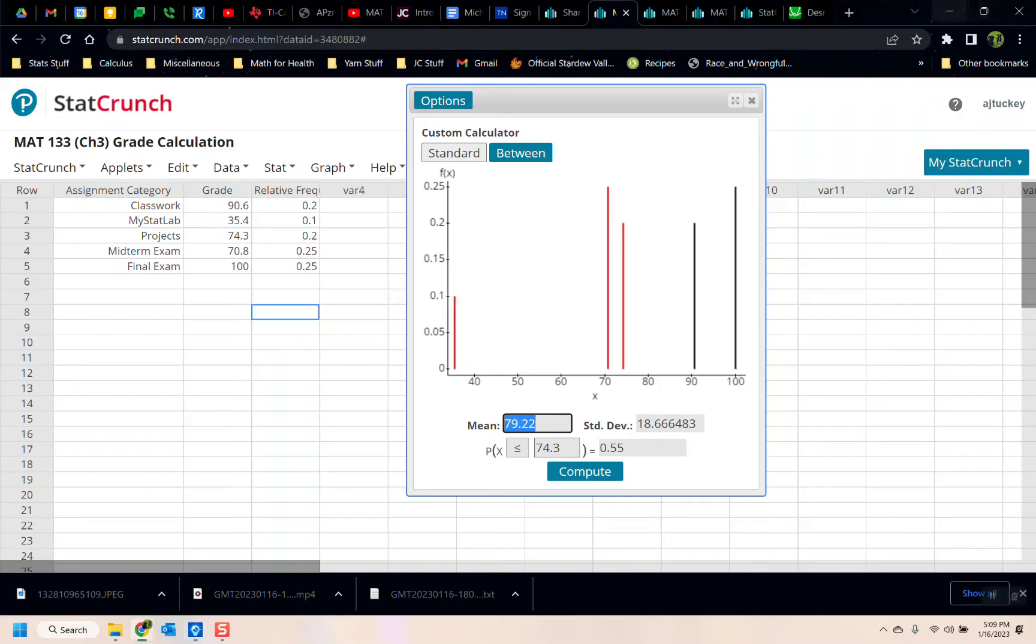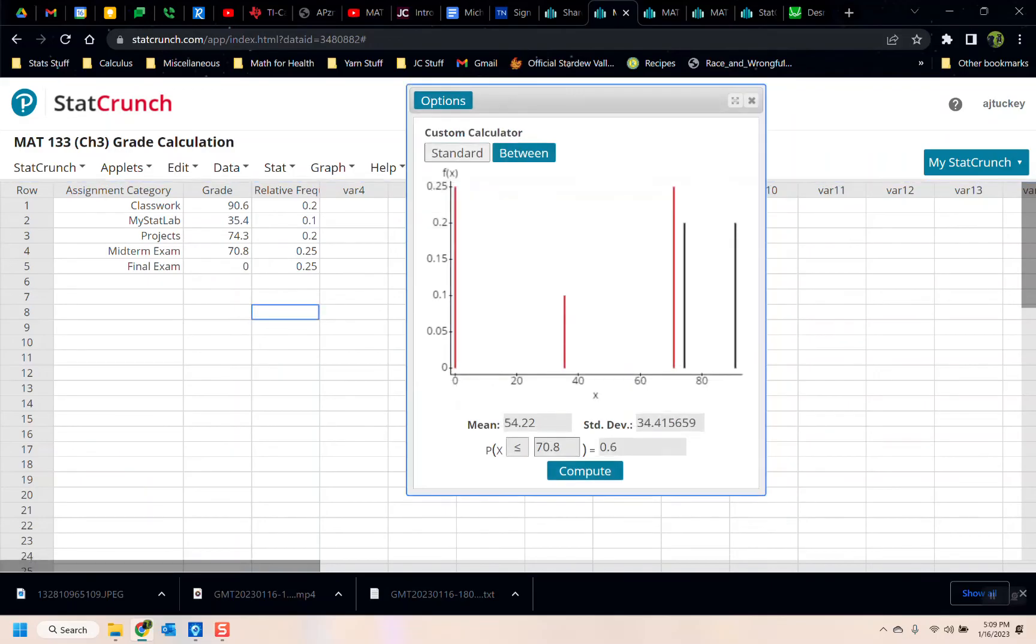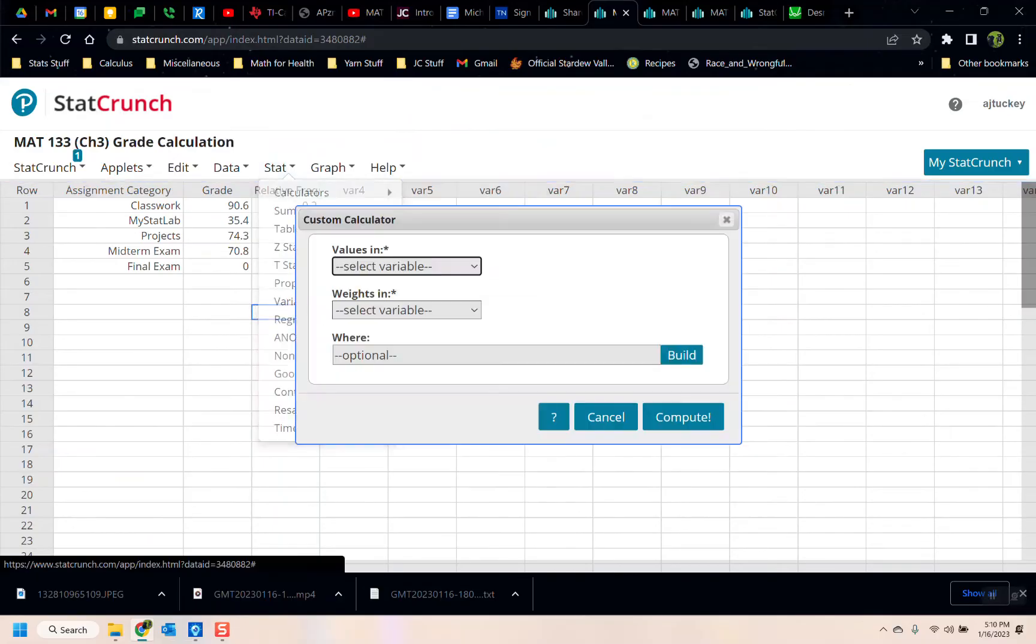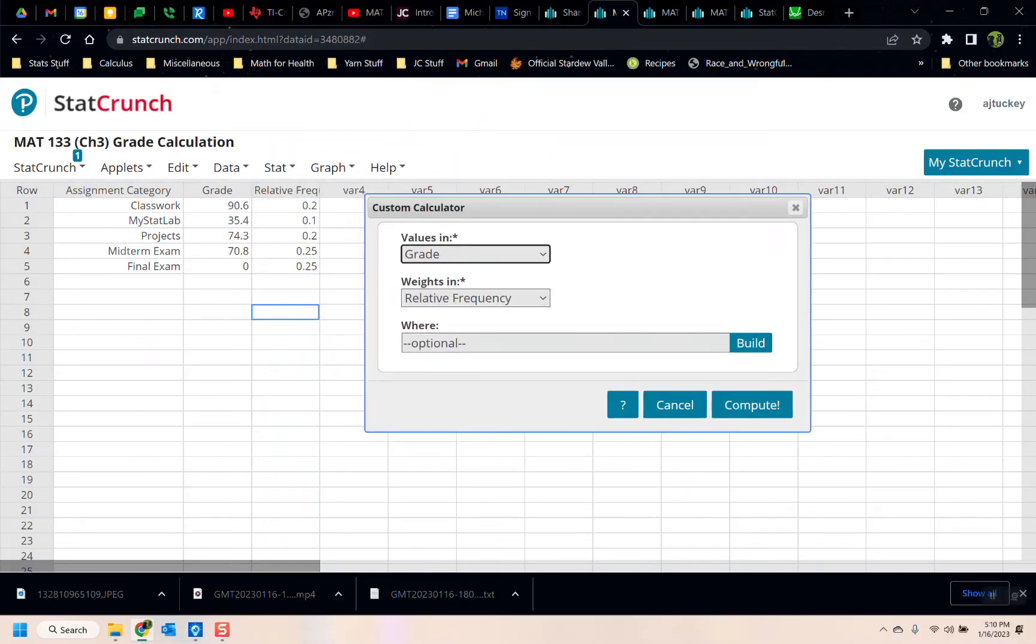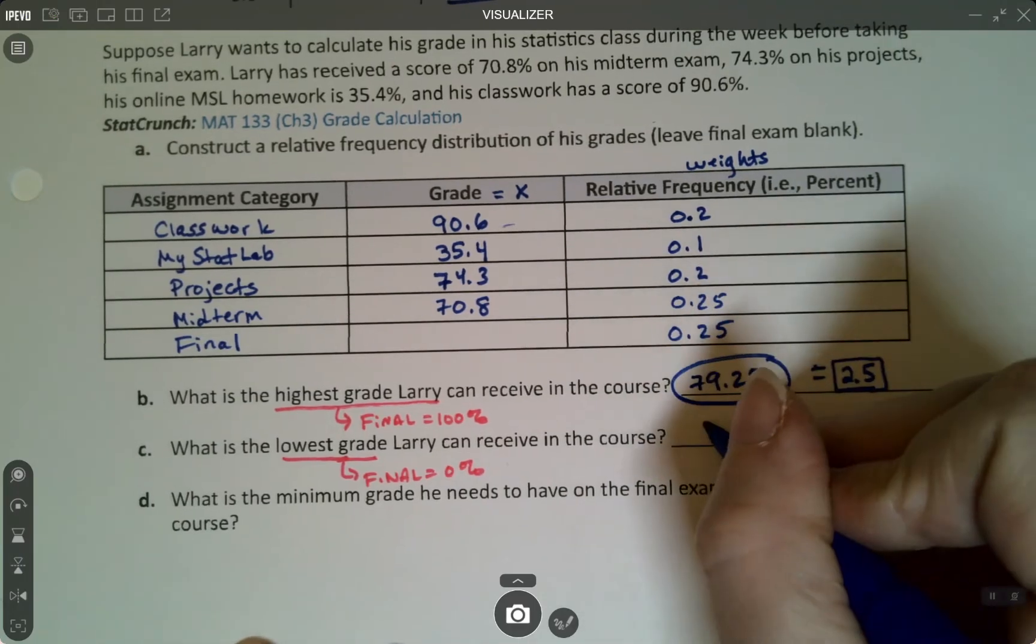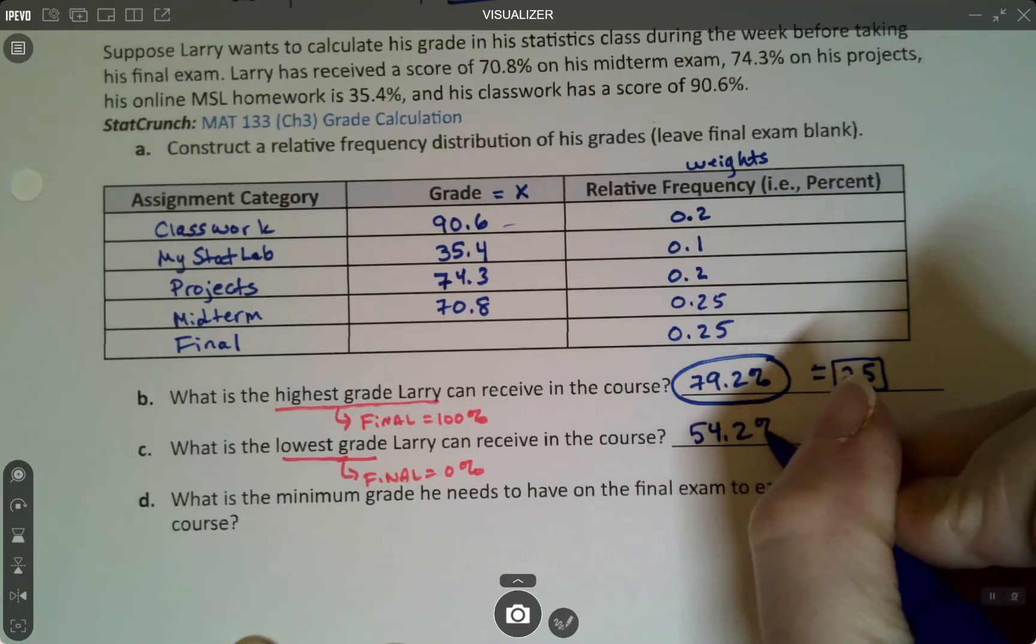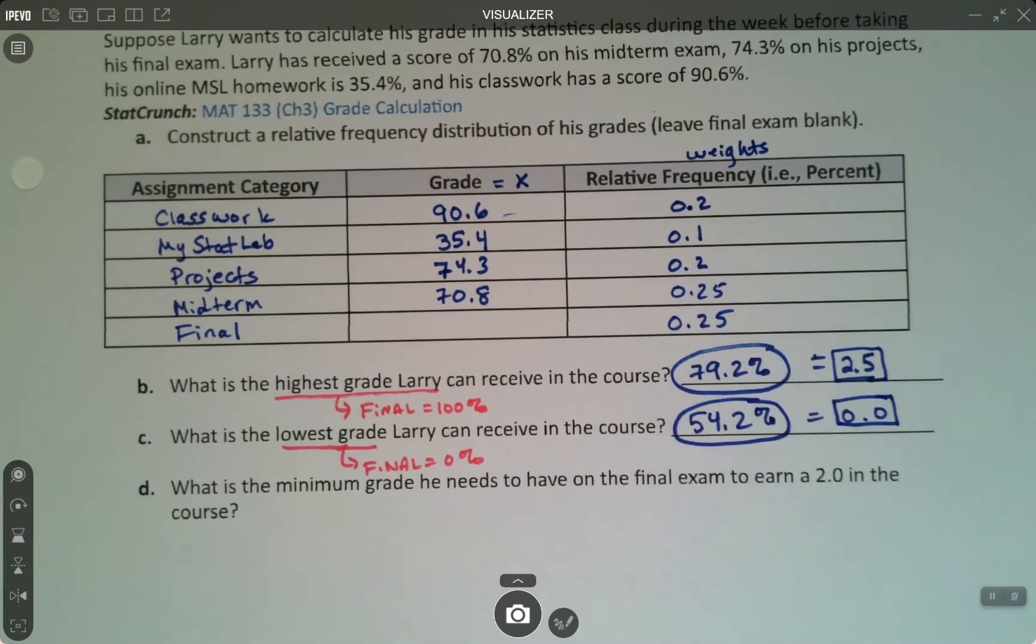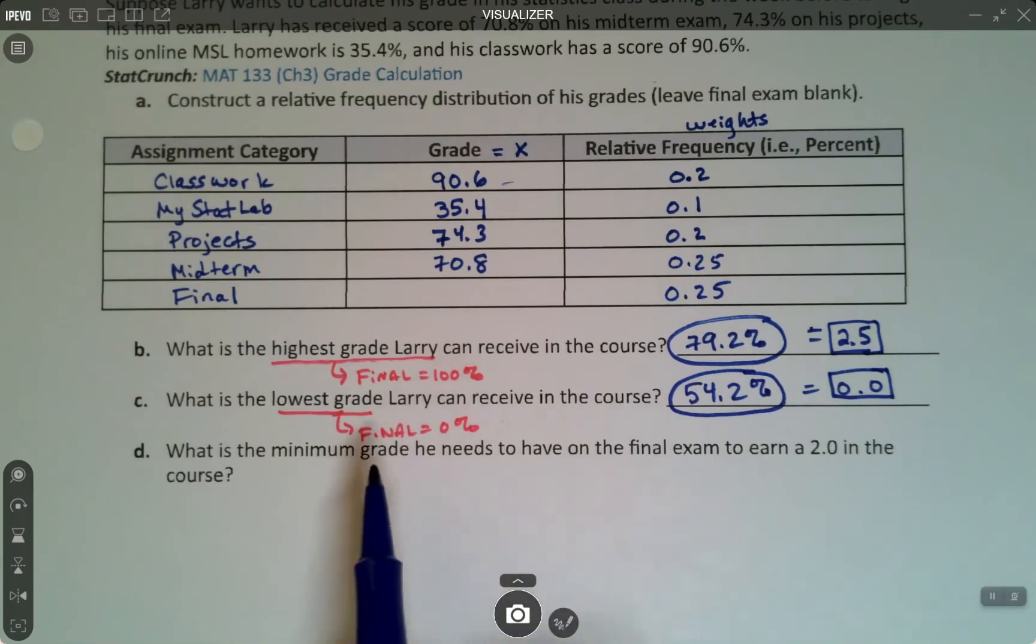Let's go do it again, but give him a 0. So let's go to here, type 0 for that final exam. And you could click options, refresh. There it is. But if you want to practice again, it's stat, calculators, custom, grade, and relative frequency. Click compute. 54.22, which is a 0.0. So if he doesn't show up to take the final, he's going to get a 0. And if he shows up and gets 100%, he would get a 2.5.